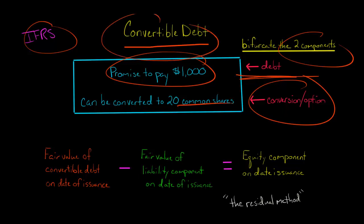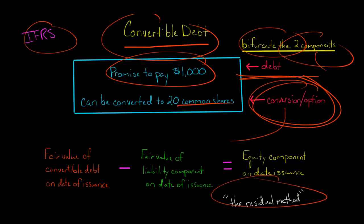The question is, how do we bifurcate? How do we separate these two components? Because IFRS says we're going to have debt and then this is going to be equity. The conversion feature is going to be accounted for as equity. So we're going to use something called the residual method.